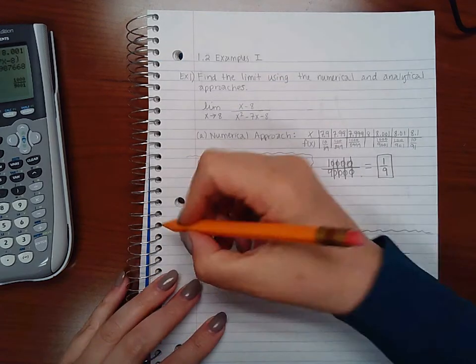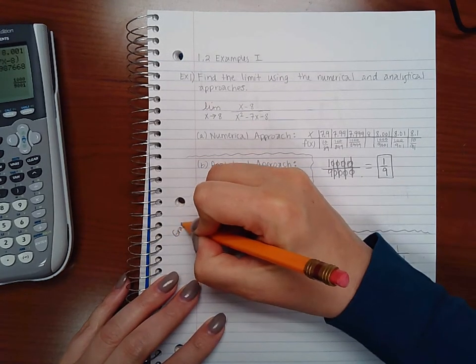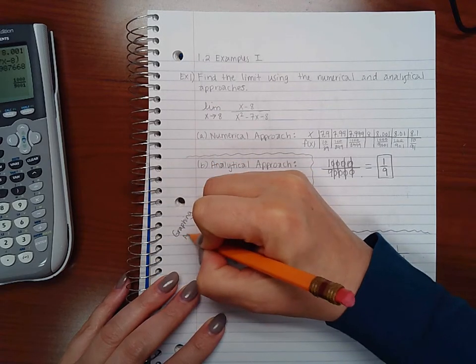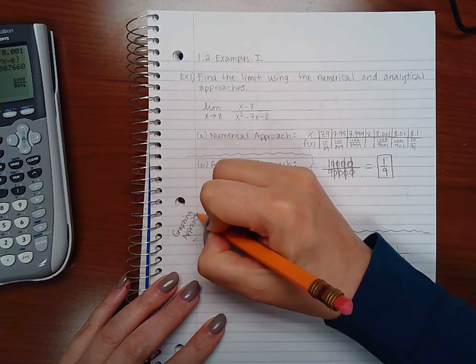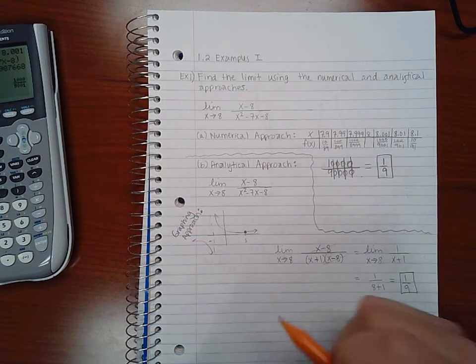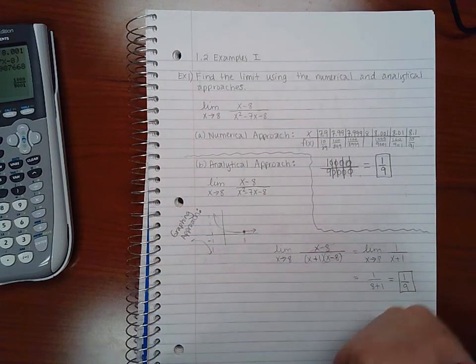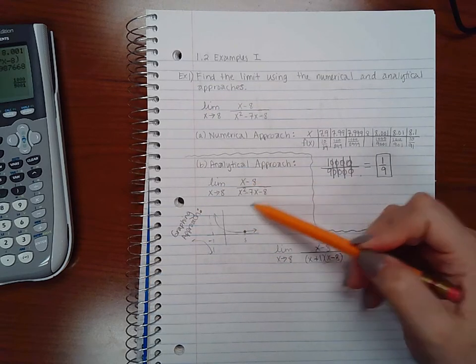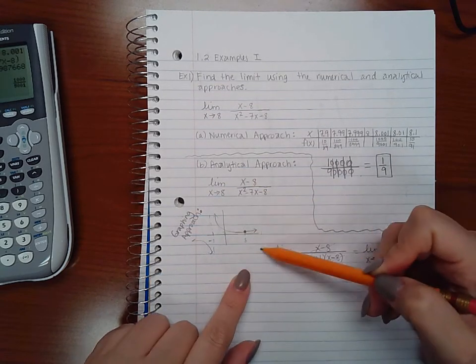Now I went ahead and did the graphing approach as well, but this was more so just to confirm. It really wasn't to help me figure out what that value is. So if I were to have drawn this, this is the graph that I would get.